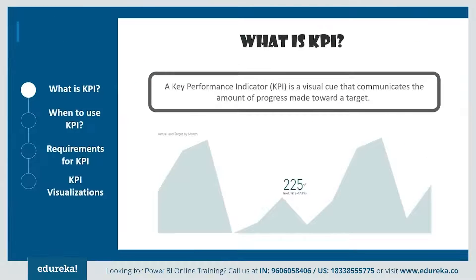A lot of you might wonder what is KPI. A KPI, or key performance indicator, is a visual cue that communicates the amount of progress you've made towards a certain goal. It basically demonstrates how effectively a company is achieving key business objectives. Organizations use KPIs at multiple levels to evaluate their success in reaching targets both internally and externally.